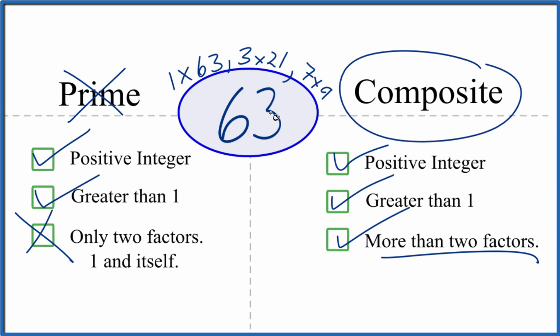This is Dr. B looking at whether 63 is a prime number or a composite number. It's composite. Thanks for watching.